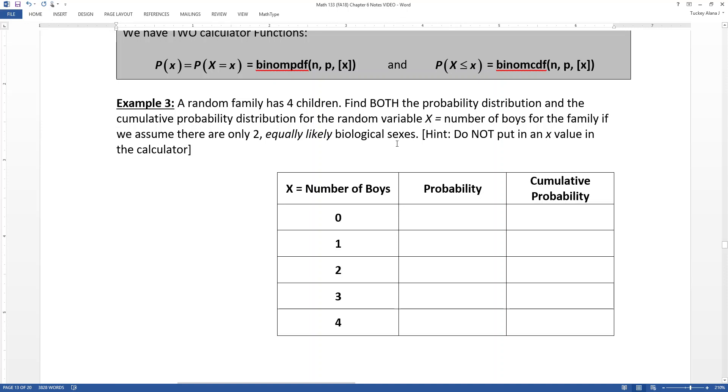If we assume there are only two equally likely biological sexes. Again, that's a pretty common value that we've run into before. We assume kind of 50-50. We assume there's only two biological sexes. Both of those things are not actually the case, but we're just going to assume it for our purposes.